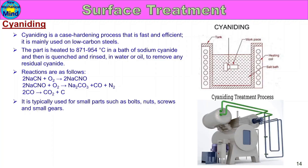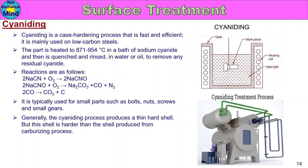Cyaniding is typically used for small parts such as bolts, nuts, screws, and small gears. Generally, the cyaniding process produces a thin hard case, but this case is harder than the case produced from the carburizing process.